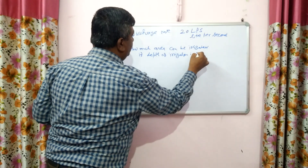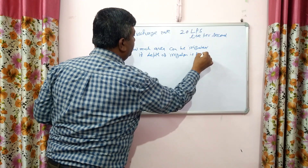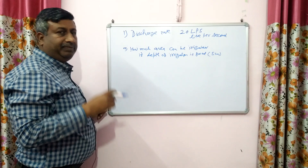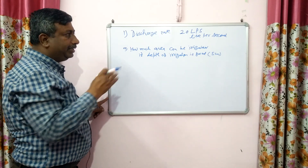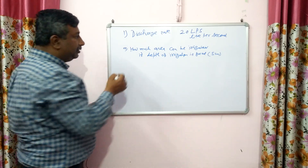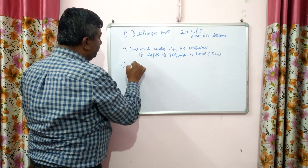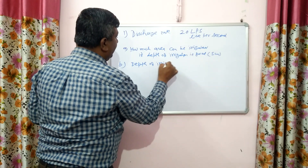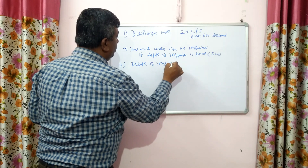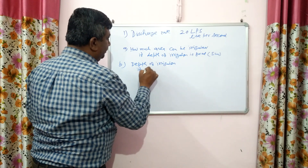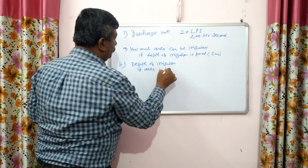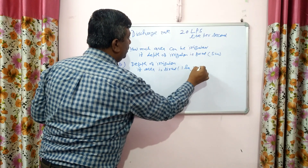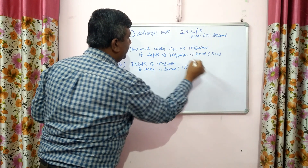Suppose irrigation depth is fixed at 5 centimetres. Then we can calculate how much area can be irrigated. Or we can calculate the depth of irrigation if the area of the field is given — suppose area is 1 hectare, 2 hectare, or 3 hectare.